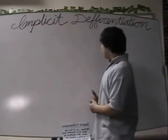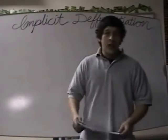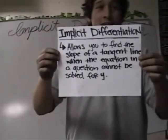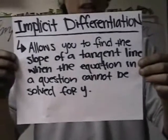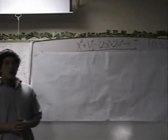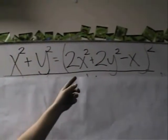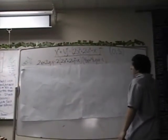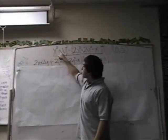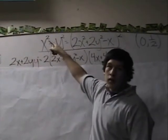I'm Charles, and today I'm going to be talking to you about implicit differentiation. Implicit differentiation allows you to find the slope of a tangent line when the equation in a question cannot be solved for y. Here I'm going to try to find the slope of a tangent line using implicit differentiation. Here I have the equation x squared plus y squared equals parentheses 2x squared plus 2y squared minus x, all to the power of 2, at a given point 0 and 1 half. The first step is to find the derivatives of this whole equation using the power rule.